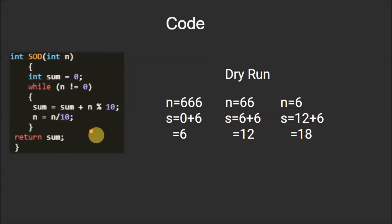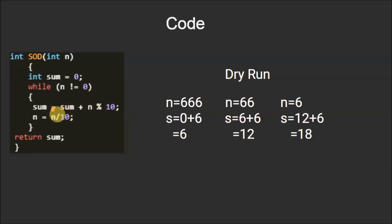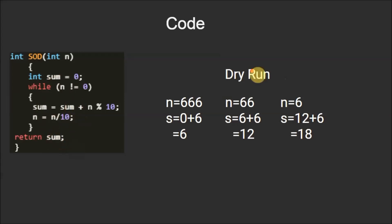This is only a part of the code that will be used in the later part. We have a variable `sum` initialized with zero, which will store the sum of the digits. We have a while loop with the condition n is not equal to 0. Inside, we have `sum = sum + n mod 10`, then n is updated to n divided by 10, which removes the last digit. After the while loop, we return the value of `sum`.